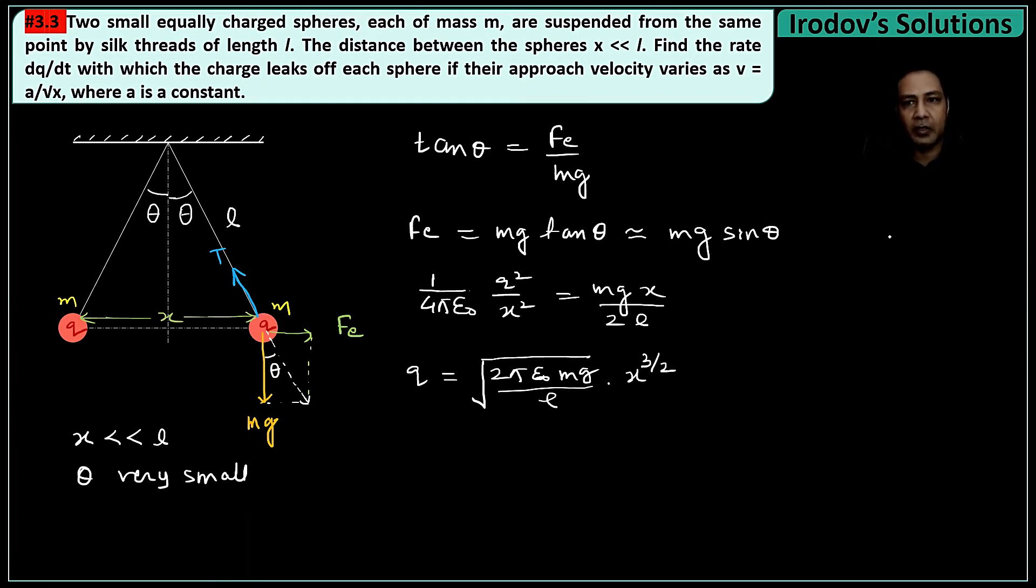So the rate of leaking of charge is actually -dq/dt. It's written in the question as dq/dt but if I write with the sign that will be -dq/dt. The velocity of approach is the rate at which the separation between them decreases, so v_approach is actually -dx/dt. That velocity of approach is given in the equation as a function of x: a/√x.